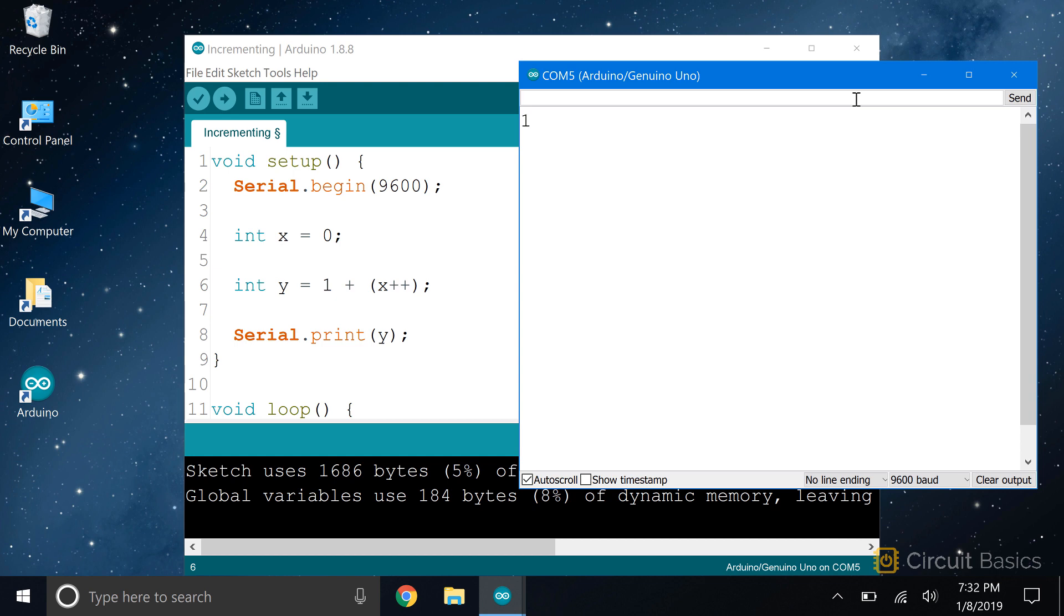As you can see, the answer is 1. That's because the math was performed with x before incrementing it. Initially, x is equal to 0, so 1 plus 0 equals 1.